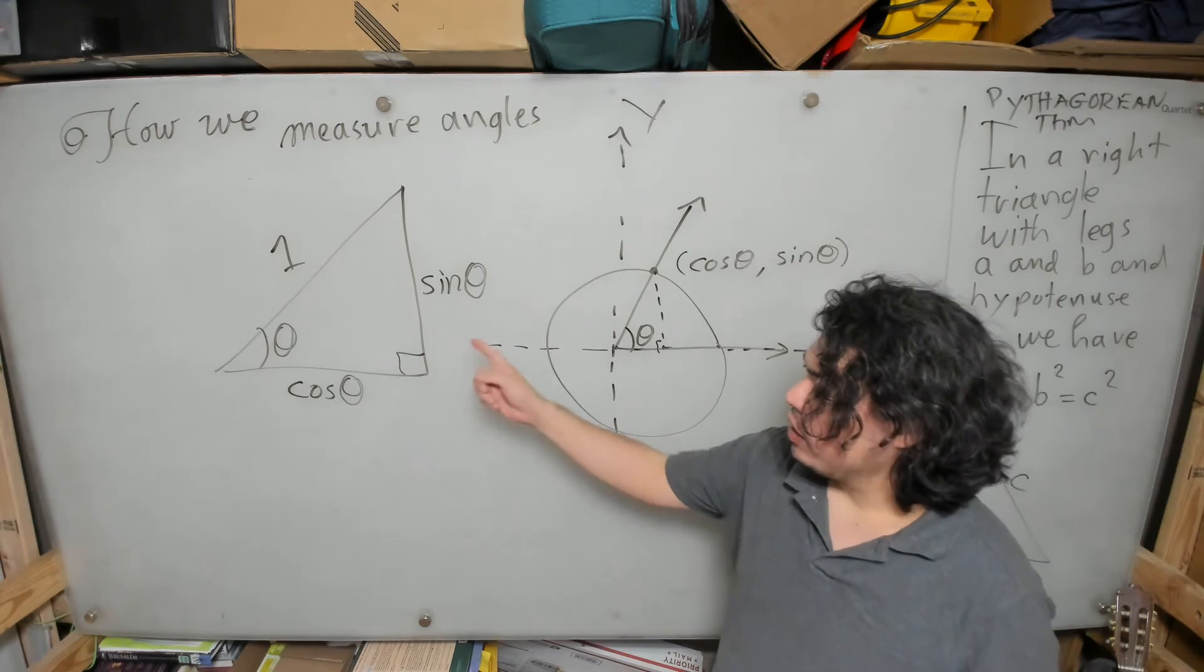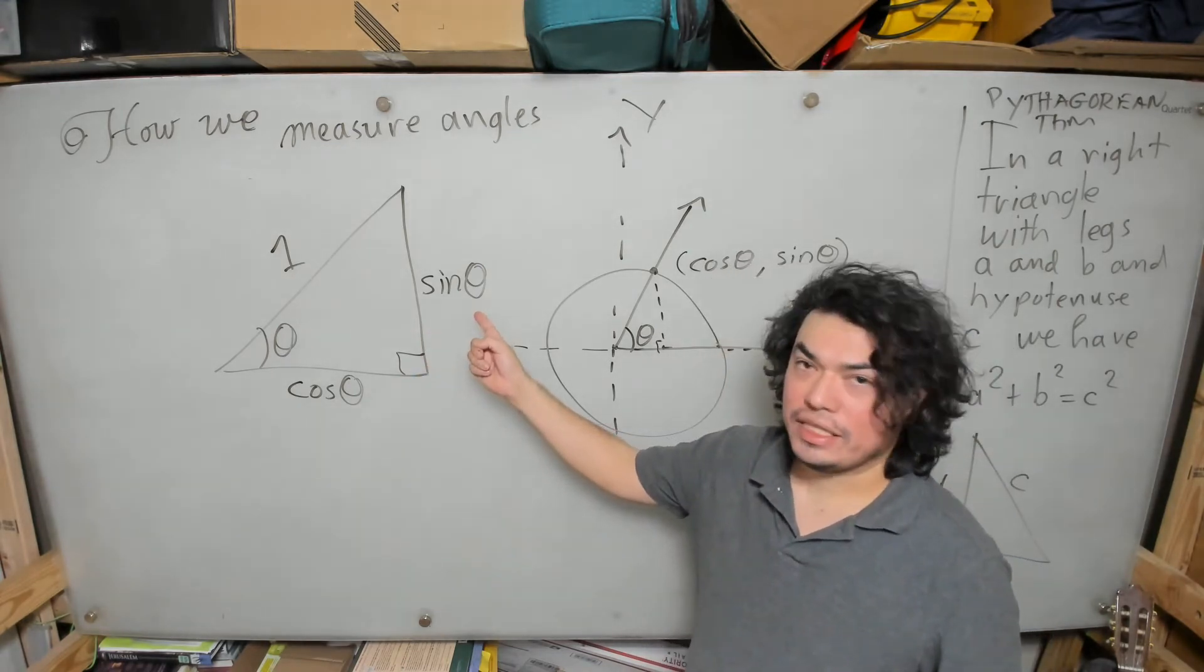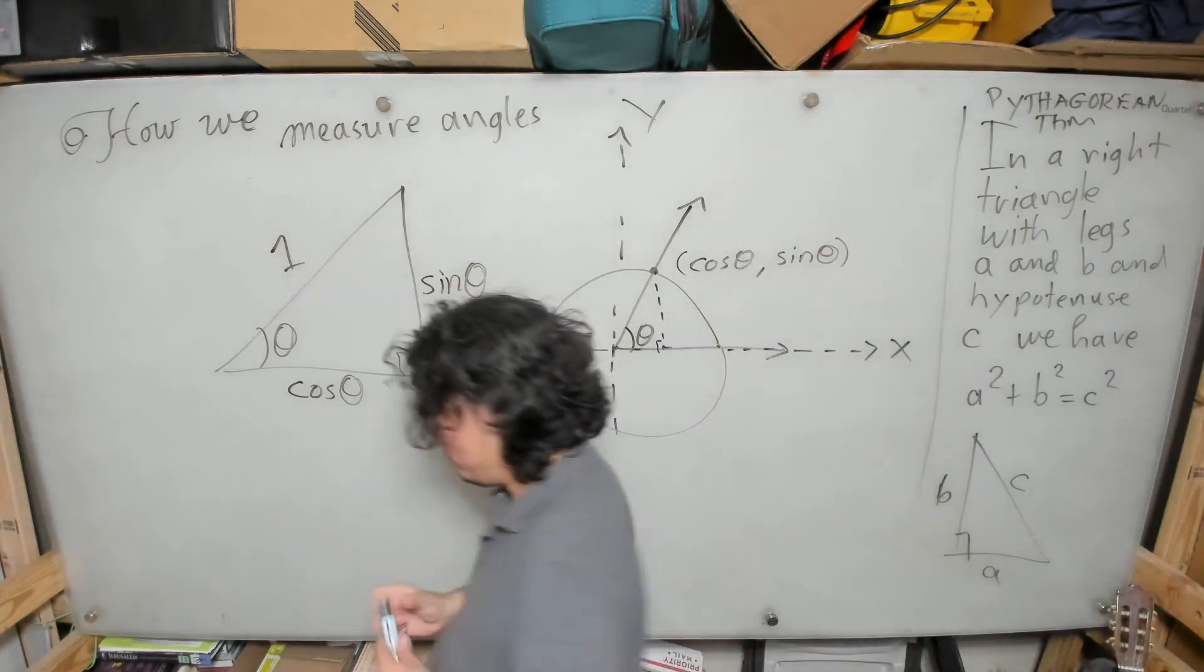Look at this triangle. This is a right triangle. One of the legs has length cosine theta, the other leg has length sine theta, and the hypotenuse has length one.